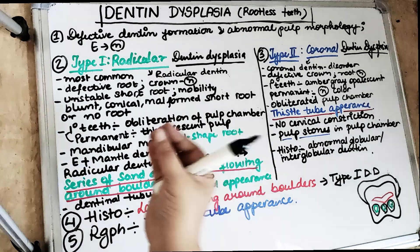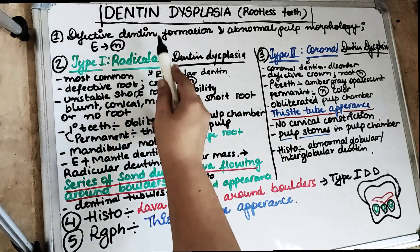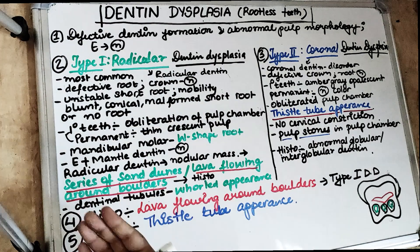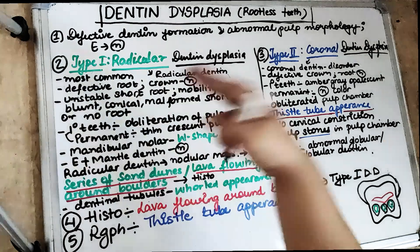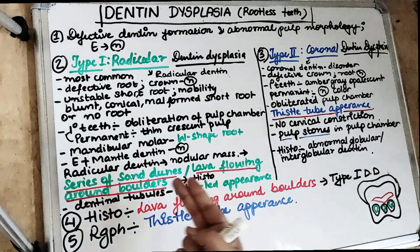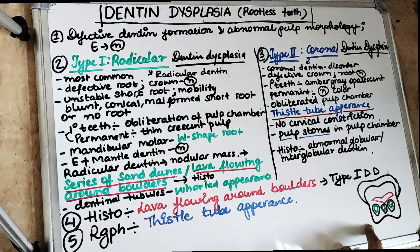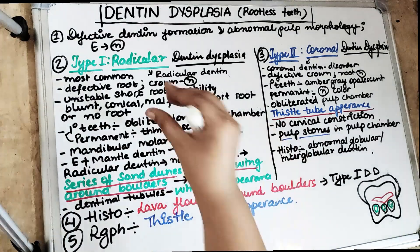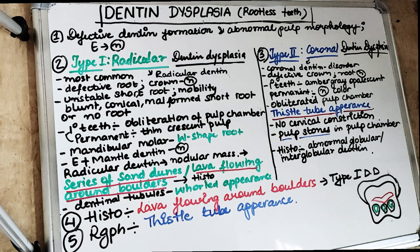Dentine dysplasia is an autosomal dominant inheritance disorder characterized by defective dentine formation and abnormal pulpal morphology. However, the enamel remains absolutely normal. We have two types of dentine dysplasia: the radicular type and the coronal type. The radicular type is most common, and in the radicular type there is no root — either the tooth is absolutely rootless or has a very short root. That is why dentine dysplasia is called rootless teeth.